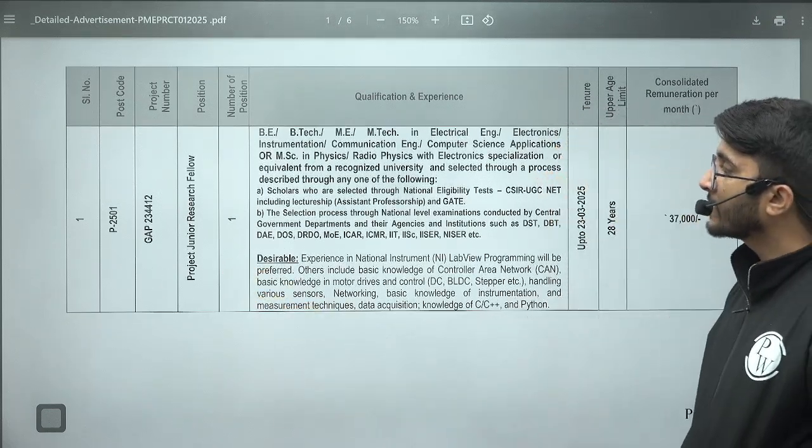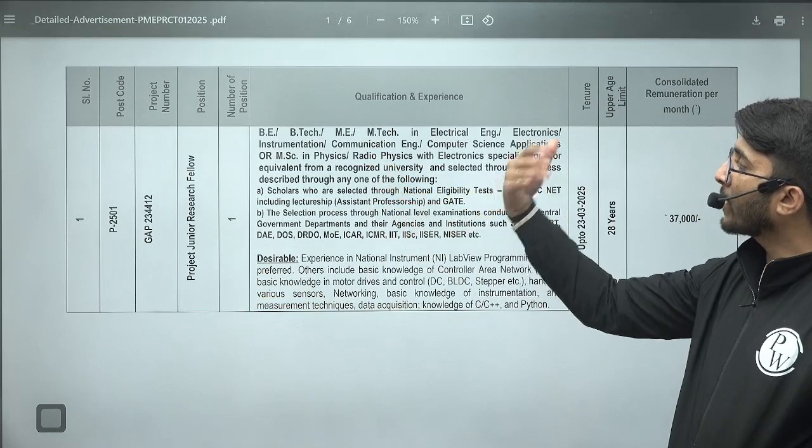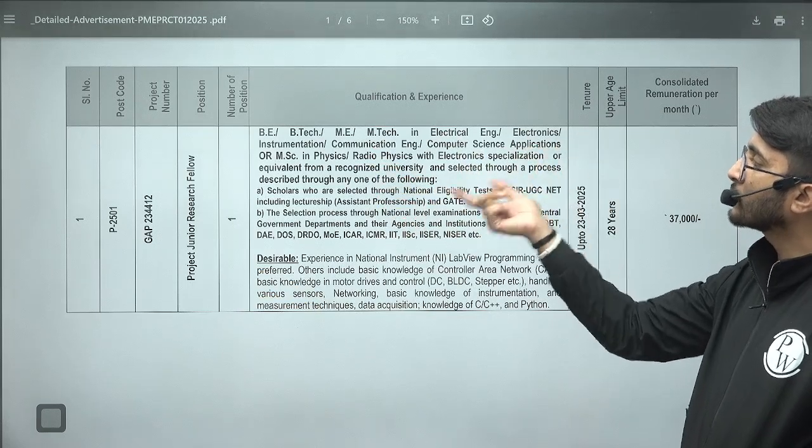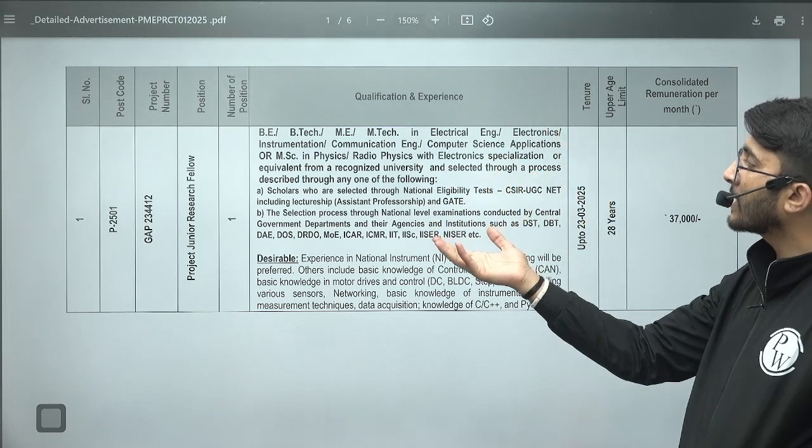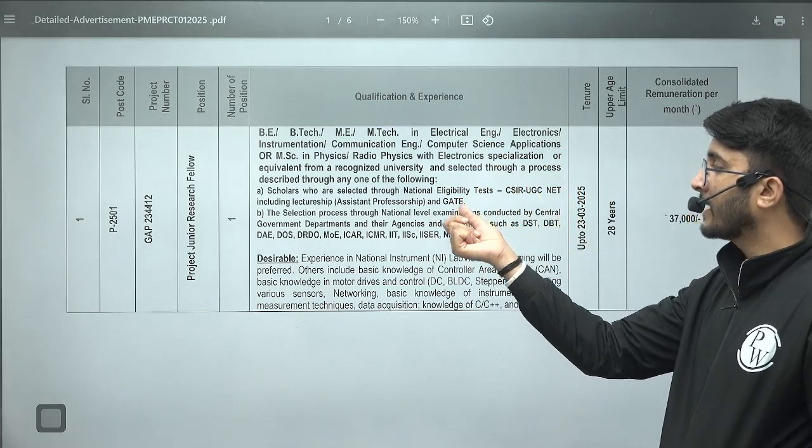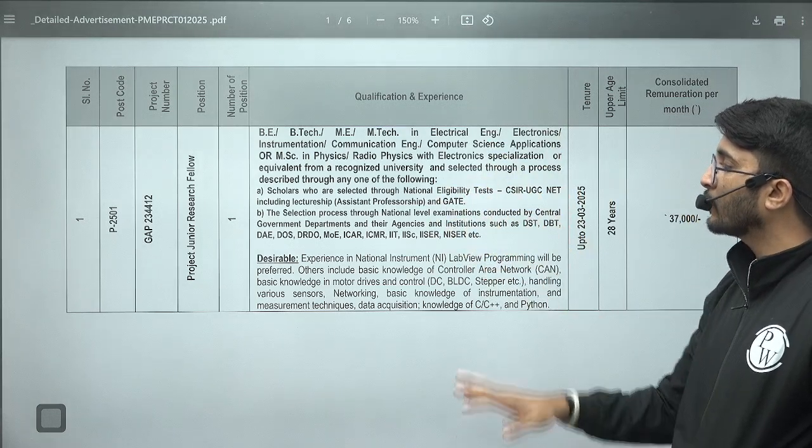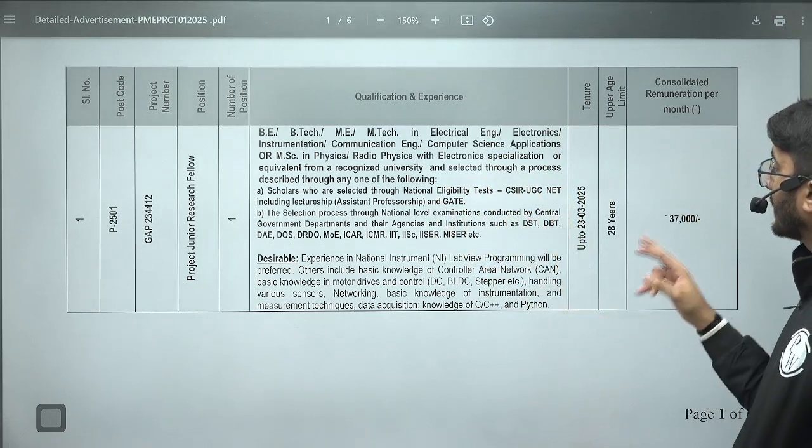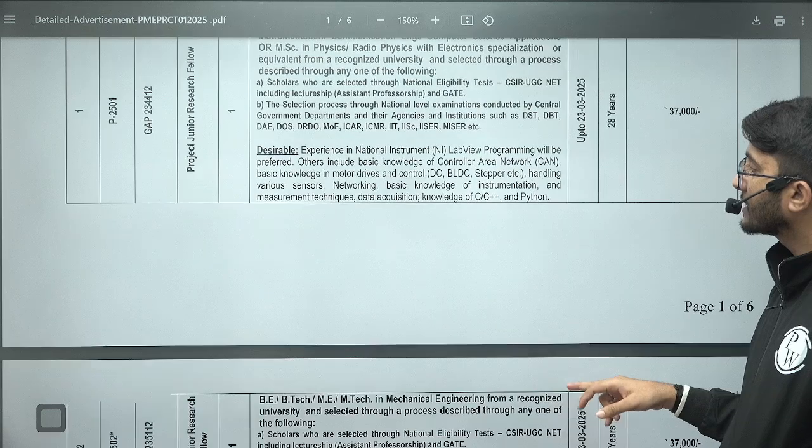If you talk about Project Junior Research Fellowships, then BE/BTech or ME/MTech in Electrical, Electronics, Instrumentation, Communication, Computer Science, Applications, or multiple other domains. If you have a GATE scorecard, like average GATE scorecard or just qualify GATE, you are eligible. You will also receive 37,000 rupees stipend.